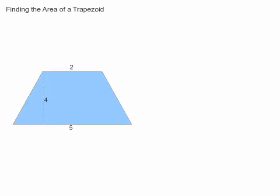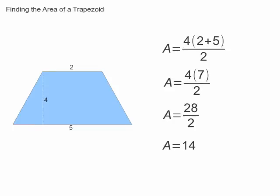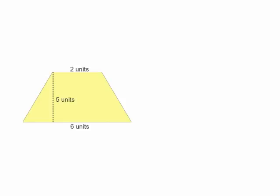Plug in the measures you do have from the trapezoid, and solve for the one you don't. Now, let's find the area of our trapezoid.